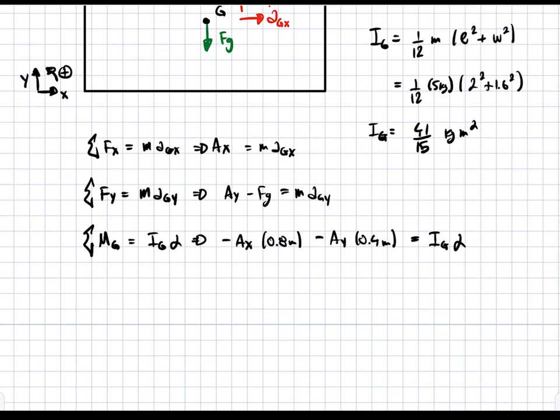As we can see, we have three equations but five unknowns: Ax, Ay, AGx, AGy, and alpha. So we need two more equations, but fortunately we can add equations from the acceleration equation. We know the acceleration at point P, and that's going to constrain our system and add the necessary equations to solve for all of the unknowns.